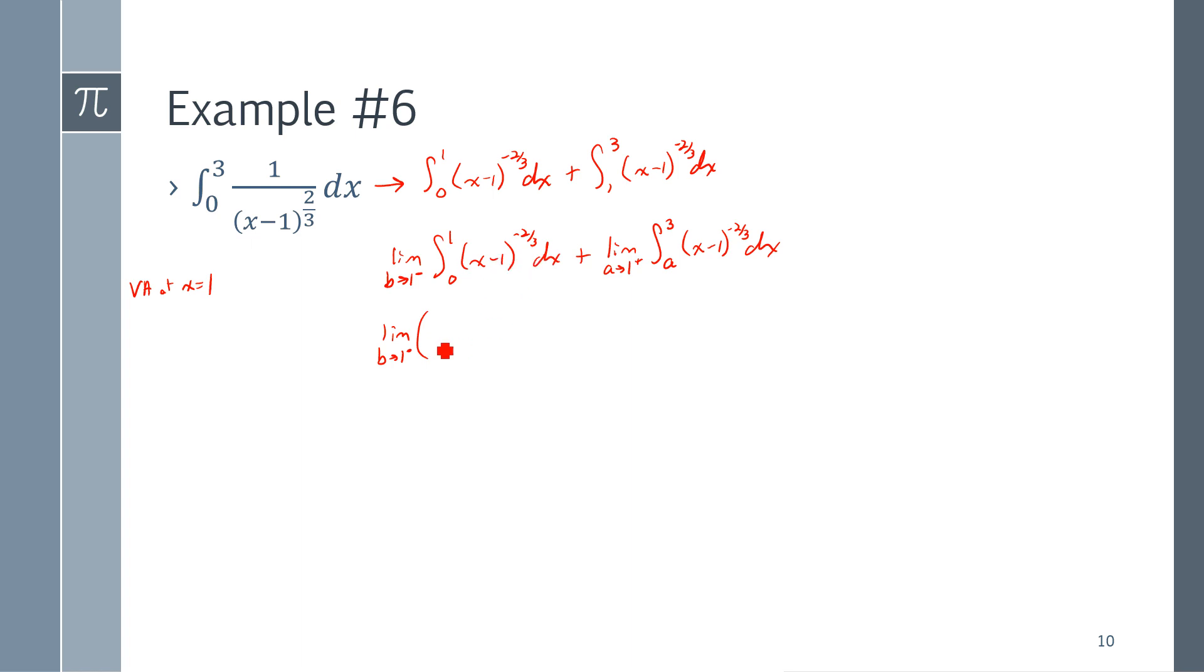Antiderivative of x minus 1 to the negative 2 thirds would be 3 times x minus 1 to the 1 third. That'd be from 0. That's a B for my upper bound. And, fortunately, the exact same antiderivative for my other integral. But it's from A to 3.